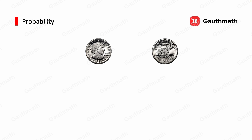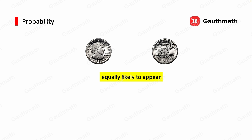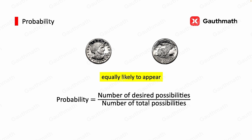For the SAT, you only need to remember one thing: for outcomes that are equally likely to happen — for example, a coin toss being head or tail — the probability is equal to the number of desired possibilities divided by the number of total possibilities. The probability of getting a head is 1 over 2, because there are two outcomes in total and only one of them is a head.